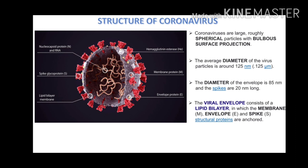Structure of coronavirus: Coronaviruses are large, roughly spherical particles with bulbous surface projections. The average diameter of the virus particles is around 125 nanometers. The diameter of the envelope is 85 nanometers and the spikes are 20 nanometers long. The viral envelope consists of a lipid bilayer in which the membrane, envelope, and spike structural proteins are anchored.